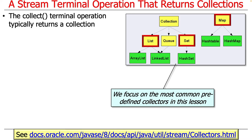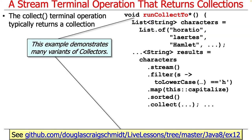Those can be implemented in various ways, but what's returned is a list, a set, or a map of some kind. This example is going to demonstrate a bunch of different collectors. There are a bunch of different methods called run — collectTo something or other — toList, toSet, toMap, and so on. We'll take a look at that in more detail shortly.